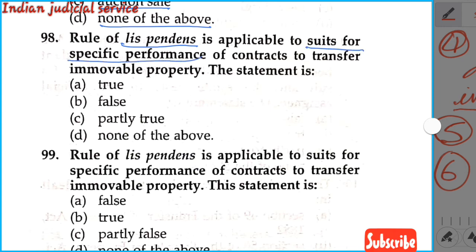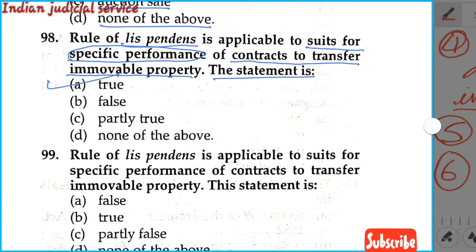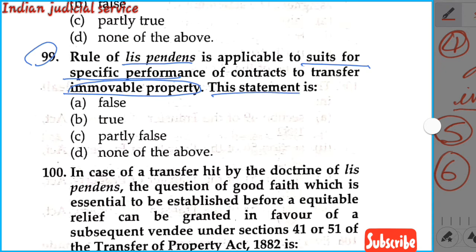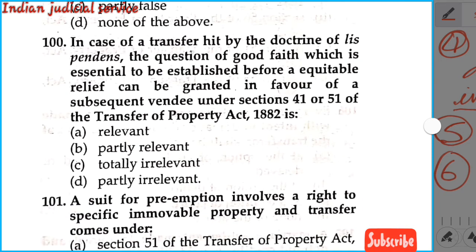Question number 98: The rule of Lis Pendens is applicable to a suit for specific performance of a contract to transfer immovable property. The statement is true, so our answer is option A. Question number 99: The rule of Lis Pendens is applicable to a suit for specific performance of a contract to transfer immovable property — the statement is true, so our answer is option B.